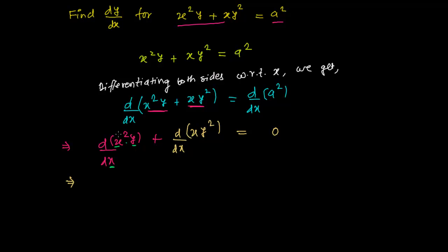One function is multiplying another function. So x squared is the first function and y is the second function. Whenever one function multiplies another, we need to use the product rule. Let's apply the product rule here — this is my first function and this is my second function.